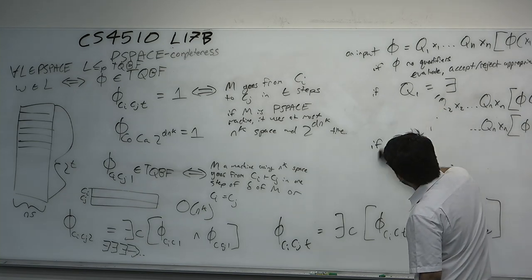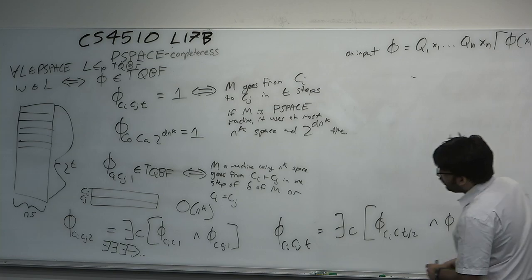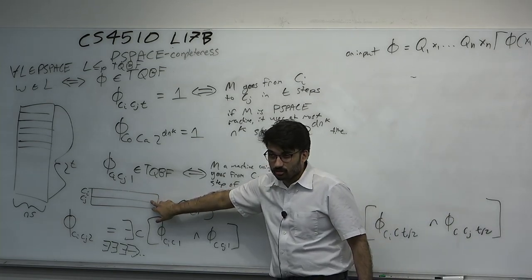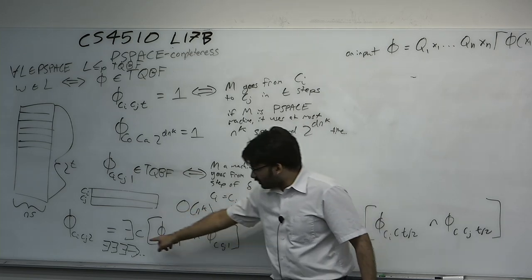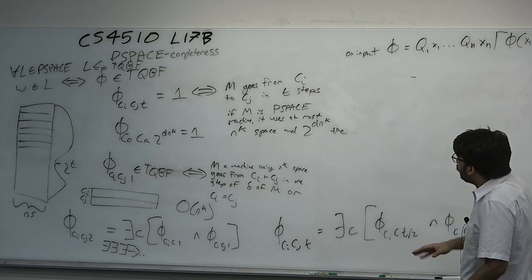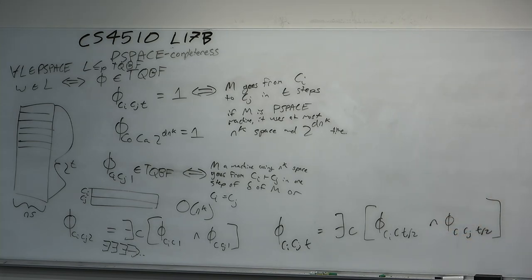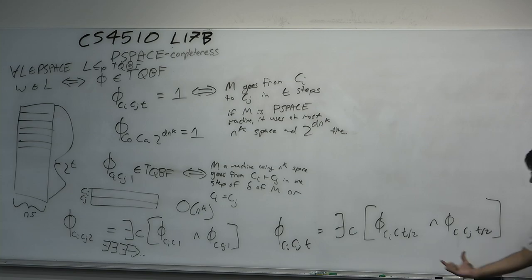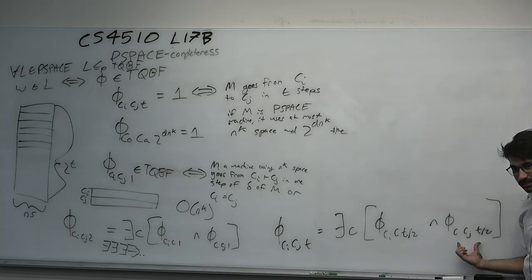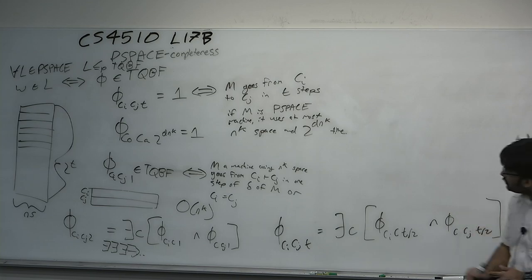Notice we haven't used any universal quantifiers yet — we have a tool. The fix is to use universal quantification to fold the formula over itself. Since existential quantification is like OR and universal quantification is like AND, we can convert the AND of two recursive calls into a universal quantification.